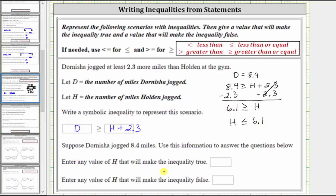Enter any value of H that will make the inequality true. As long as H is less than or equal to 6.1, the inequality is true. For example, if H equals 5, the inequality is true. If we substitute 5 for H, we have 5 is less than or equal to 6.1, which is true.